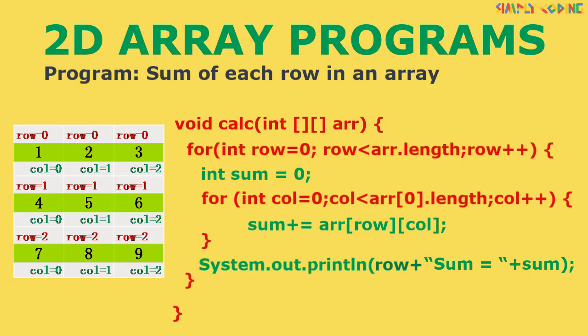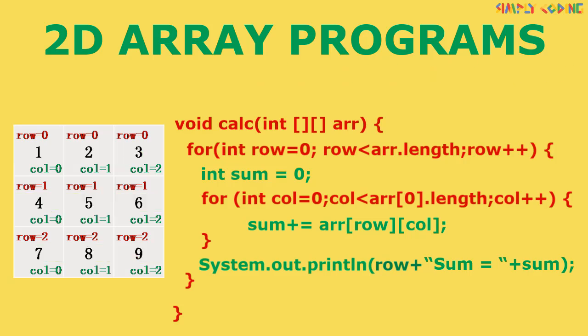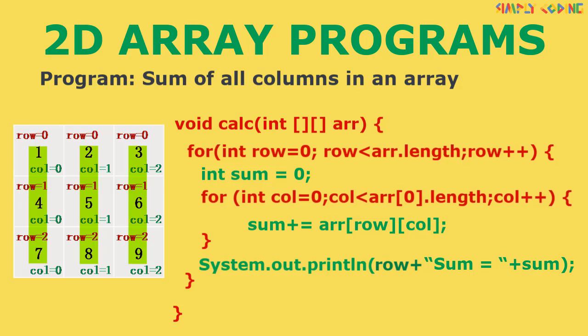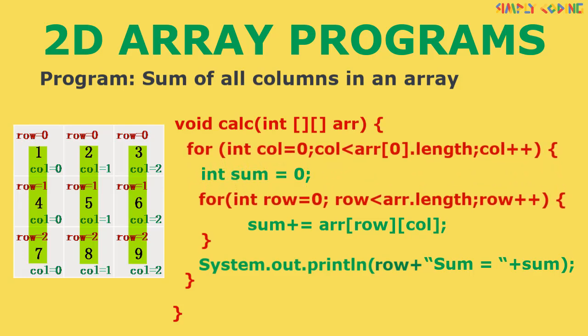Another variation is to print column-wise sum. Here, instead of row-wise traversal, we do column-wise traversal by swapping the two for loops — column traversal first, then row — and print columns instead of rows. This will print the total of all columns.